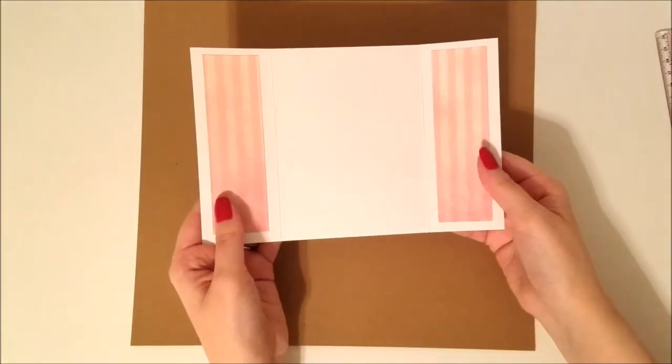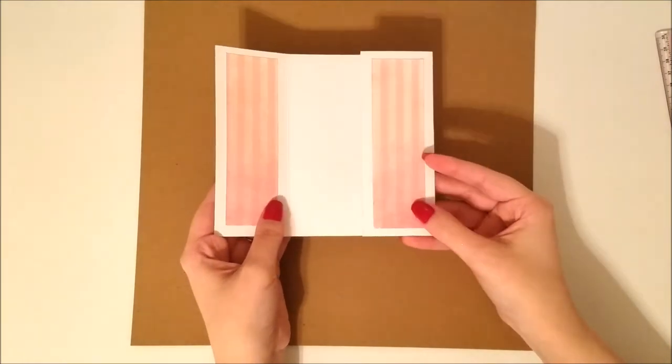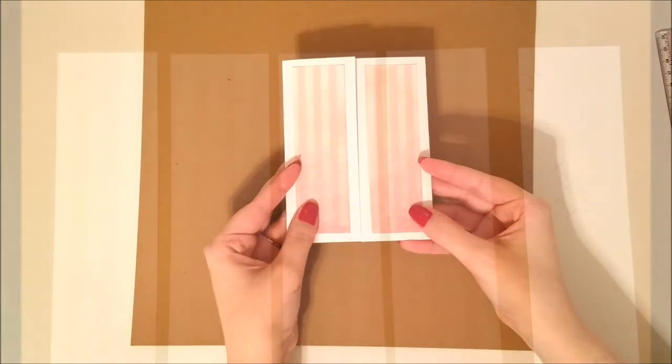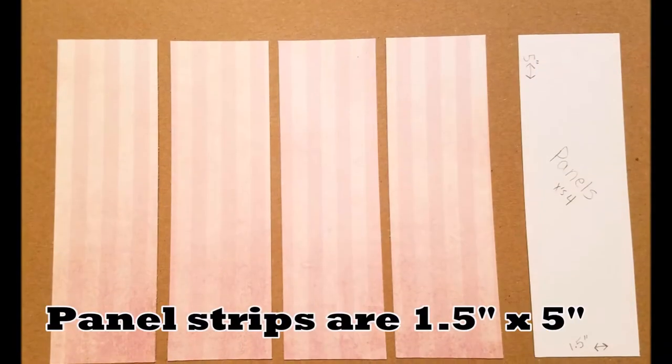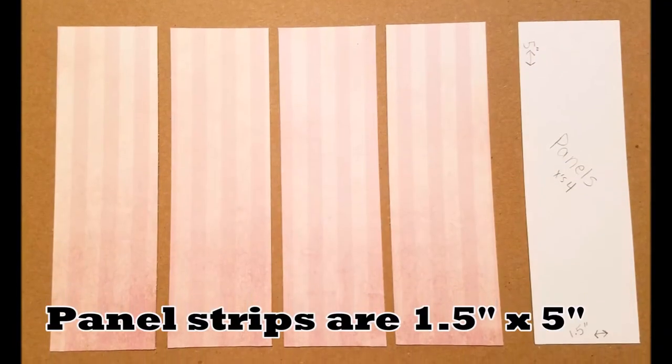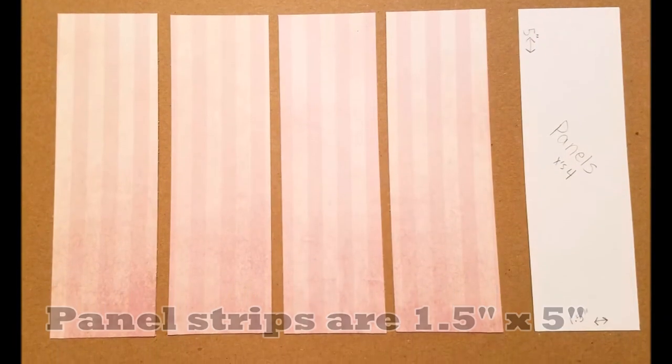And you just go ahead and fussy cut out that little image and you can just glue that onto your belly band. And then for these little panels on the inside, all you have to do is just cut four of those panels. And I cut those at 1.5 inches by 5 inches and just glued those into place, and that way it left a little bit of a white border.